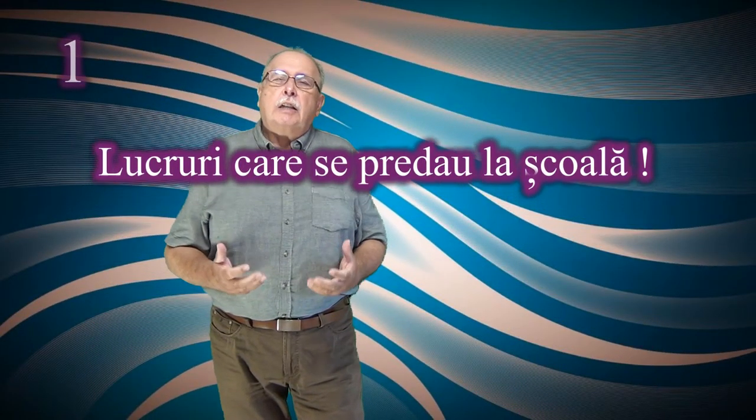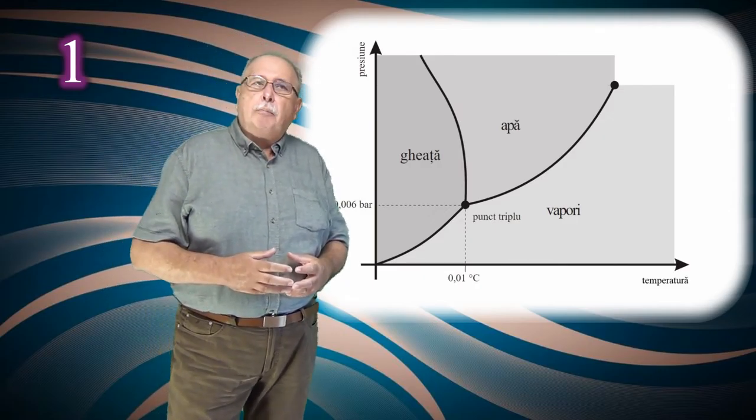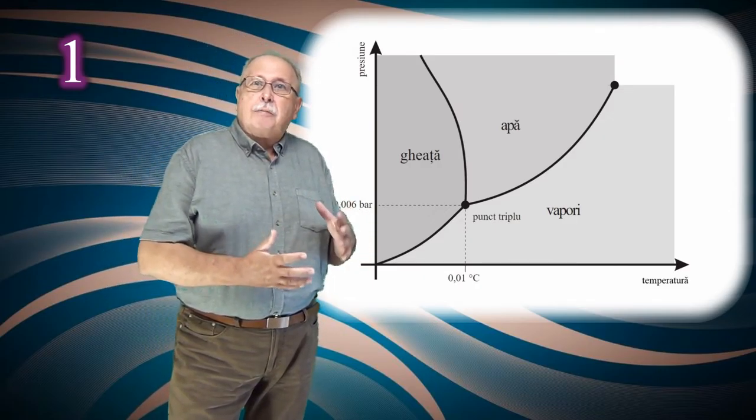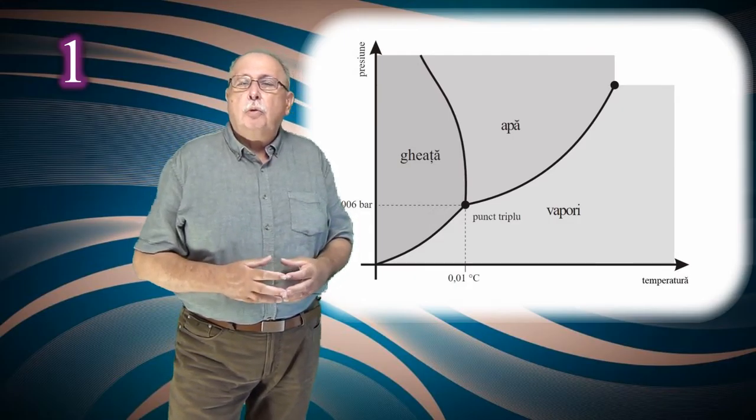Cineva pretinde că n-a învățat la școală că apa poate să înghețe și să fiarbă în același timp. În orice curs serios de termodinamică, la capitolul transformări de fază, se vorbește despre starea de punct triplu al unei substanțe. Aceasta este starea caracterizată de o anumită temperatură și presiune, în care substanța poate fi în toate stările de agregare. Puteți vedea aici un grafic de stare a apei, în care liniile care despart stările de agregare se întâlnesc într-un punct, care se numește punctul triplu al apei.